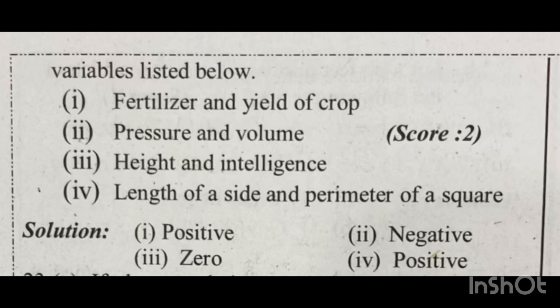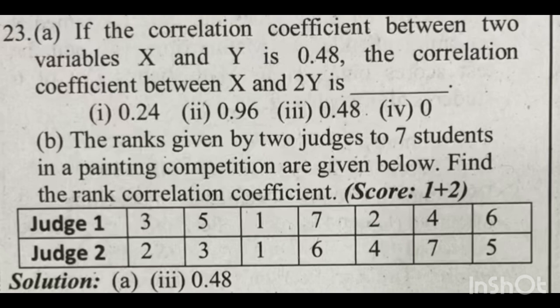Four: length of a side and perimeter of a square. If you increase the side length, the perimeter increases. That is positive correlation.